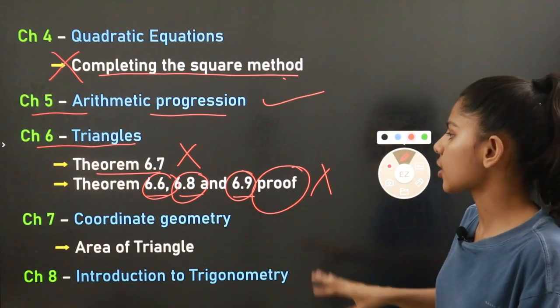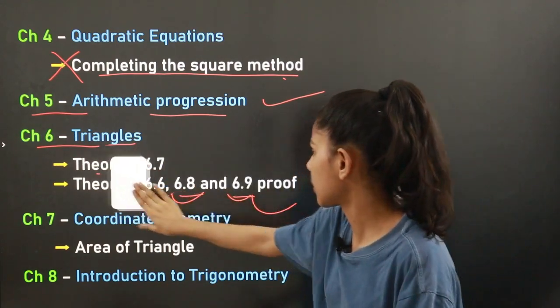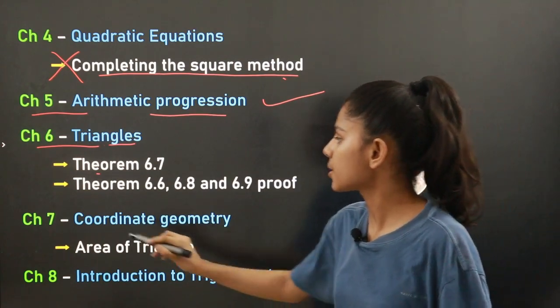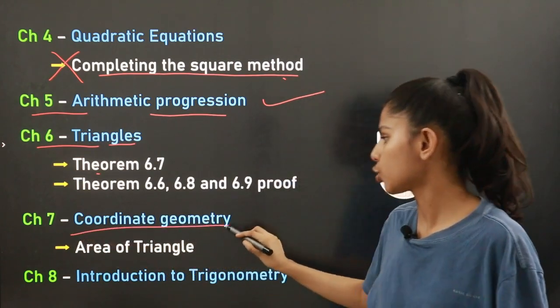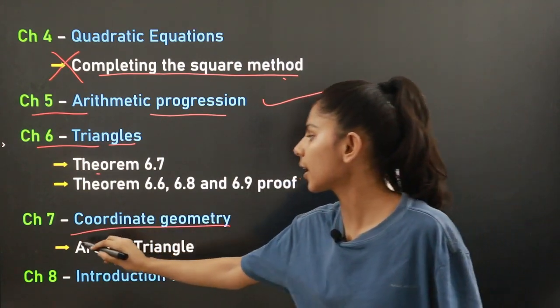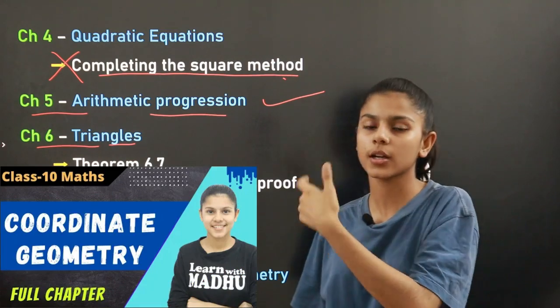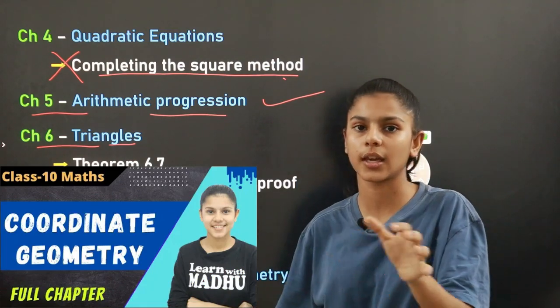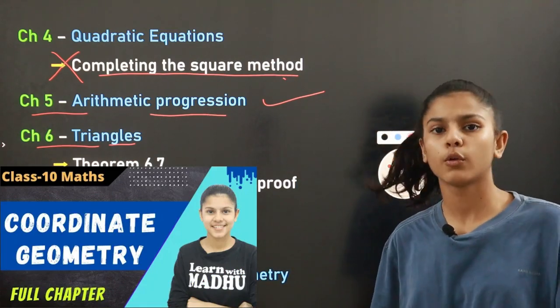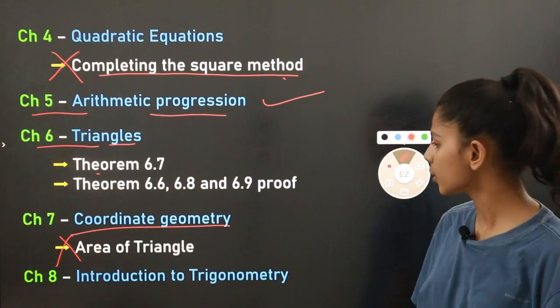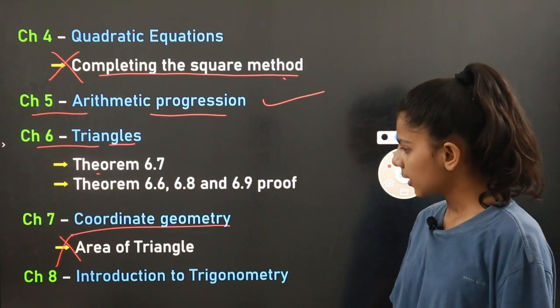Chapter number seven is Coordinate Geometry. The topic of area of triangle has been reduced from this chapter.